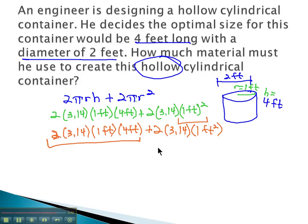Multiplying next, since we have our calculator, let's just do 2 times 3.14 times 4 is 25.12 square feet, plus 2 times 3.14 times 1 is 6.28 square feet.